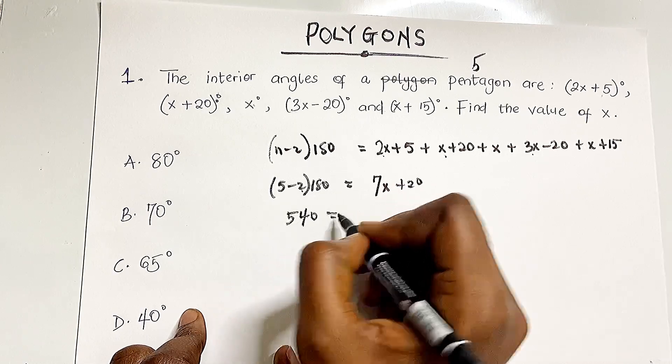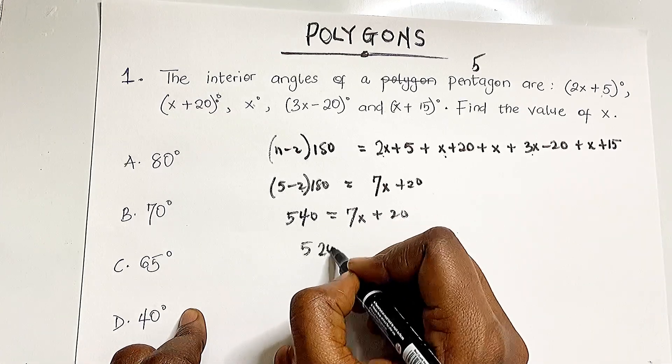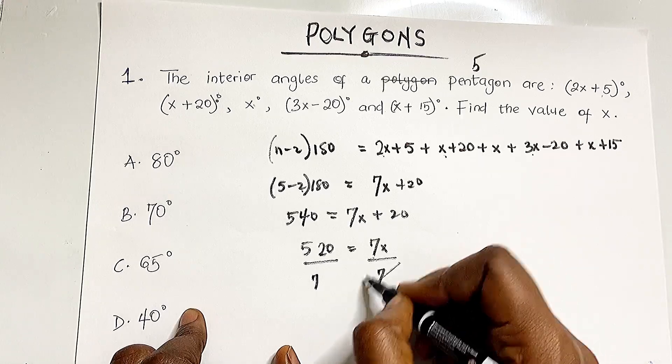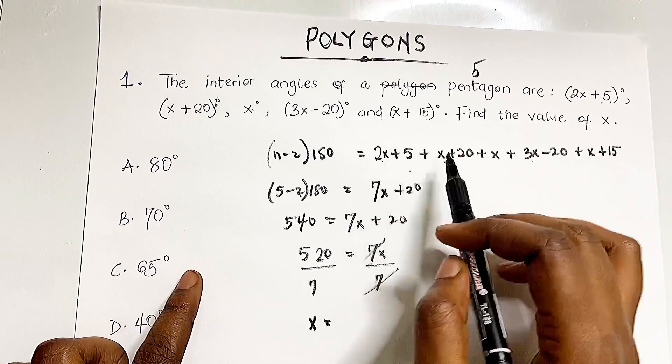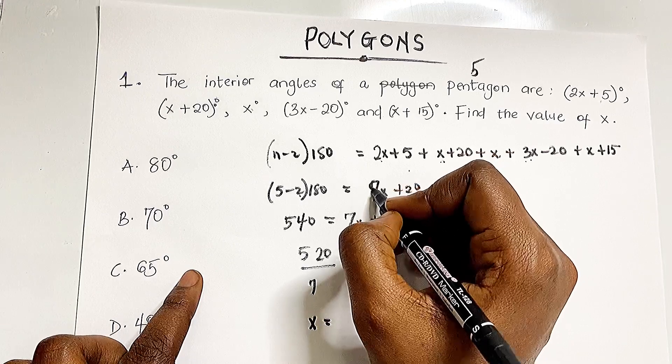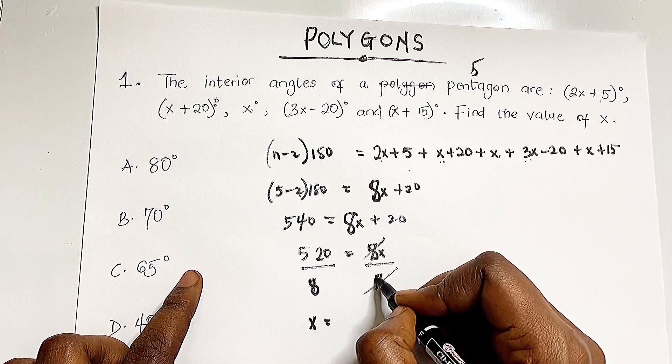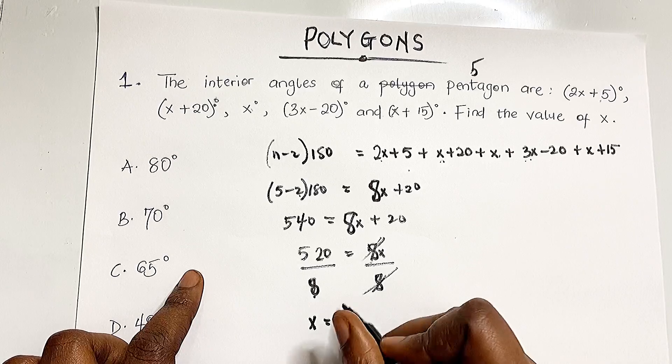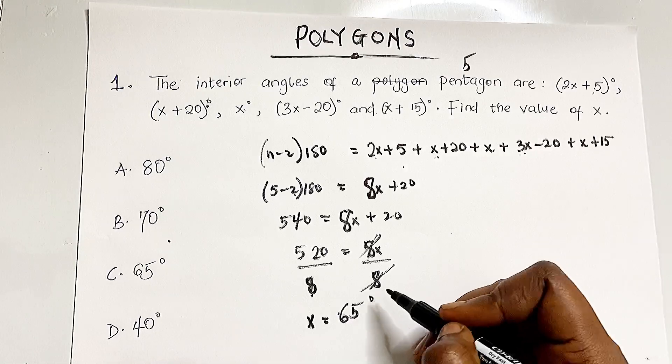So 540 = 8x + 20. Wait, I made a mistake earlier—let me recount: 2x + x + x is 4x, plus 3x is 7x, plus x is 8x. That's correct. Subtracting 20 from both sides: 520 = 8x. Dividing by 8: x = 65. The answer is 65 degrees, which is option C.